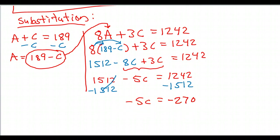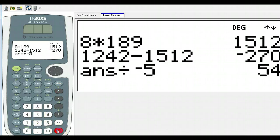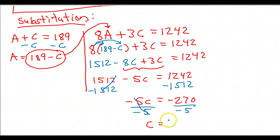Time to divide both sides by negative 5. So, this is going to give me 54. So C is equal to 54.